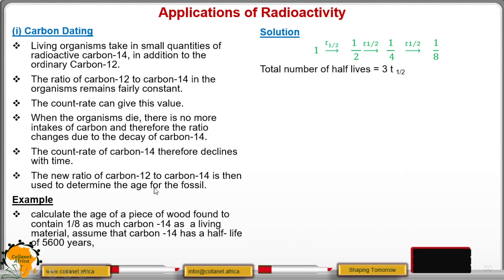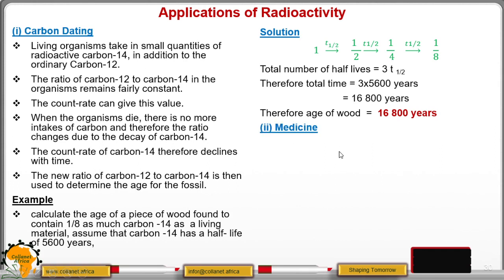But we are given the value of the half-life. We have the total number of half-lives as 3 and the half-life is 5,600. So the total time taken is 16,800 years. It implies that the age of that wood is 16,800 years. That way, we are able to determine the age of that piece of wood using carbon dating.